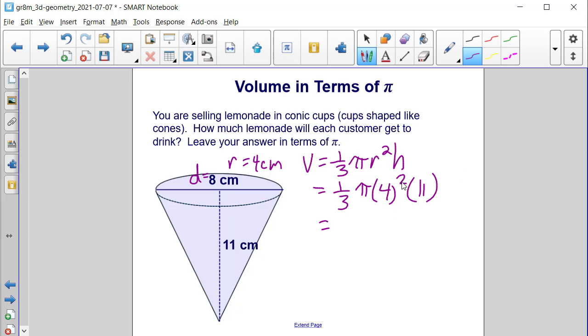So when we square 4, we get 16. So we still have 1 third pi times 16 times 11. And we can put both of these numbers over 1, and then multiply straight across.